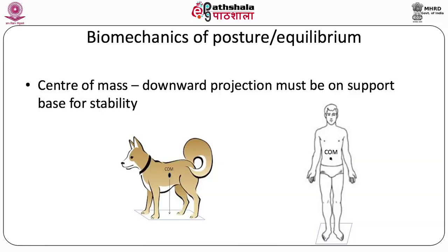Regarding the biomechanical requirements of posture, the entire body can be represented by a center of mass — a central point around which all moments of mass are considered equal. In the supine or standing position, the center of mass is located in the abdomen, around the second lumbar vertebra, approximately two to three centimeters ahead of the vertebral column.